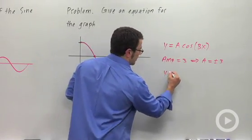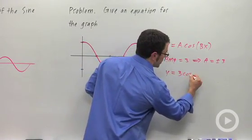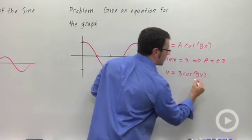So we have that y equals 3 cosine bx. We just have to find b.